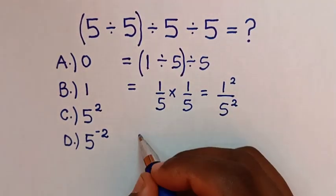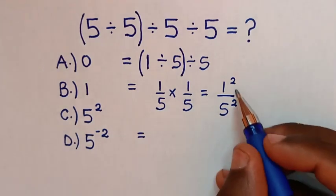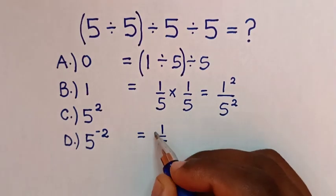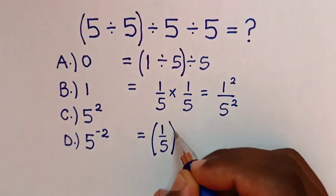Then it will be equal to, in here power of 2 is common, so it will be 1 over 5, then bracket, power of 2.